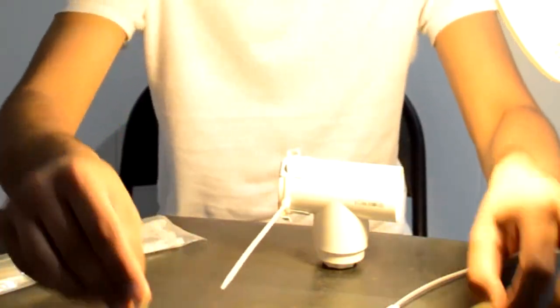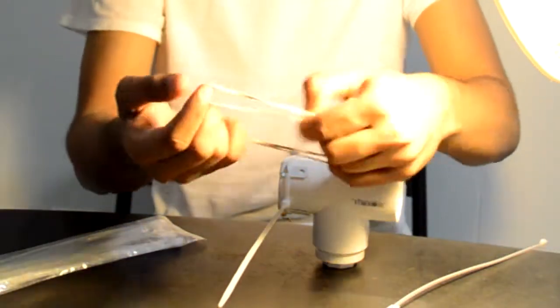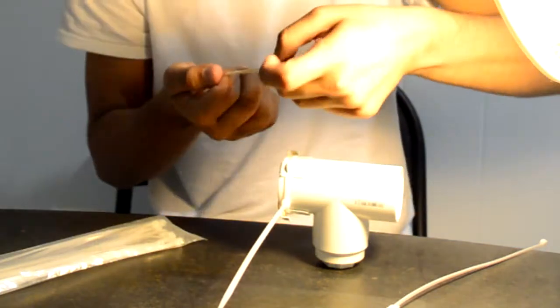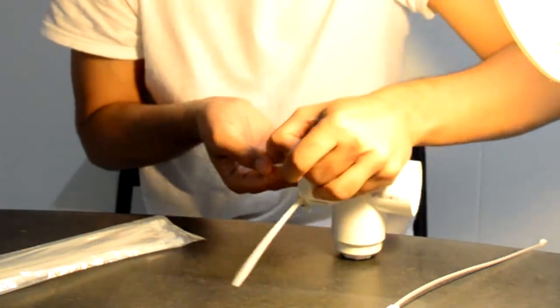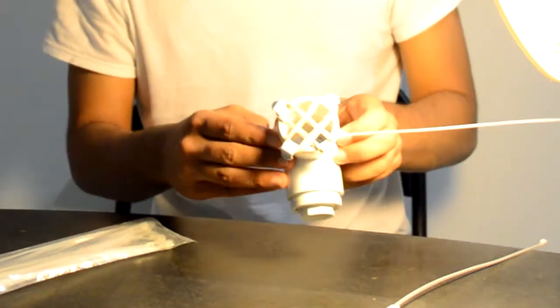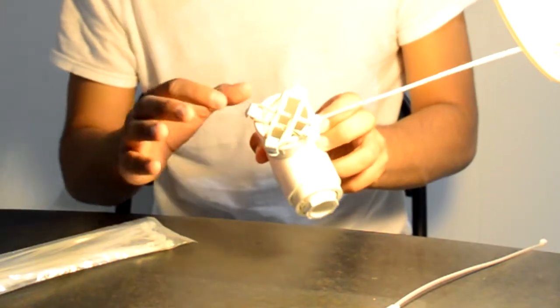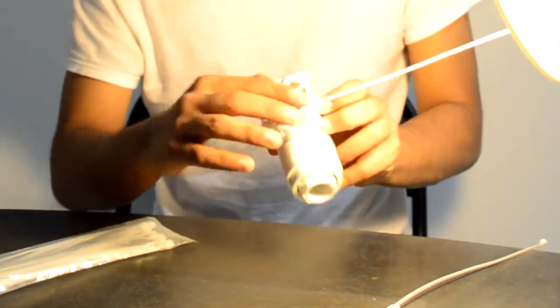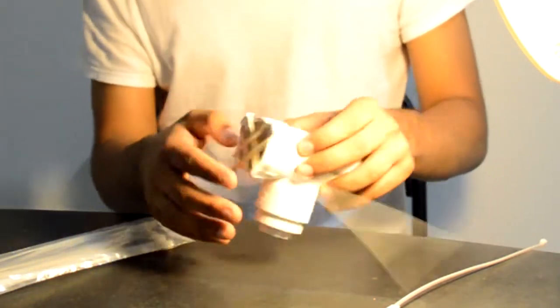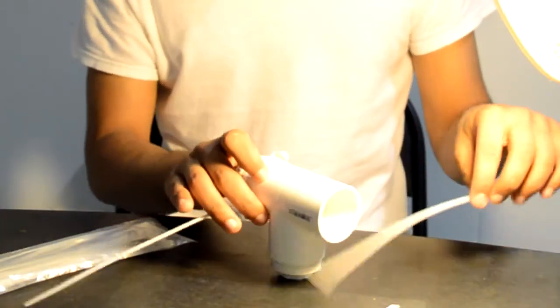Now take two other rubber bands and do the same thing. There you go. It's not right because I'm doing it too fast, but you'll get it once you're doing it. Just make an X just like that, and then do the same thing on the other side.